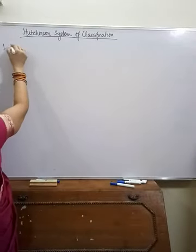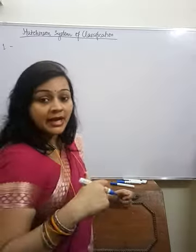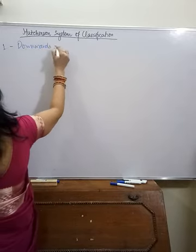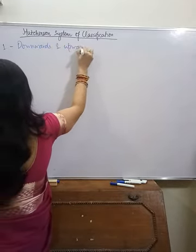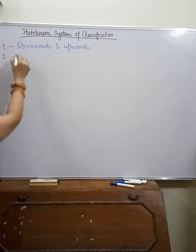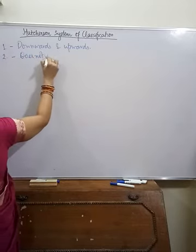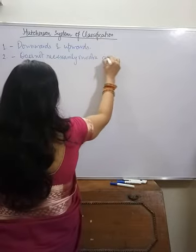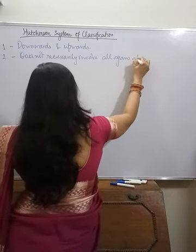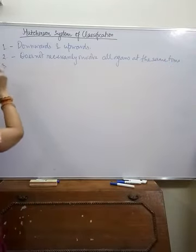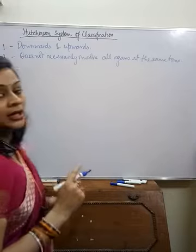These principles are: the first principle is evolution is both downward and upward. The second principle is evolution does not necessarily involve all organs at the same time. The third principle is evolution is a consistent process.